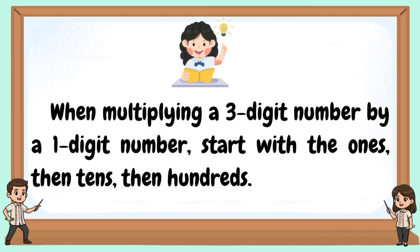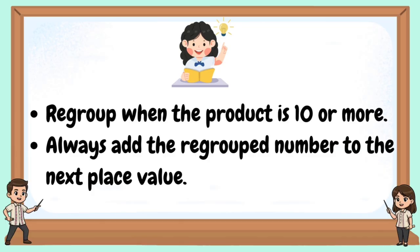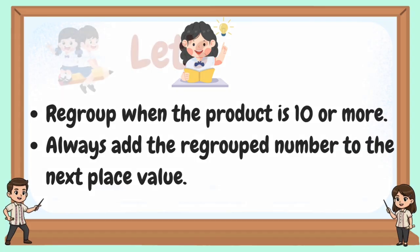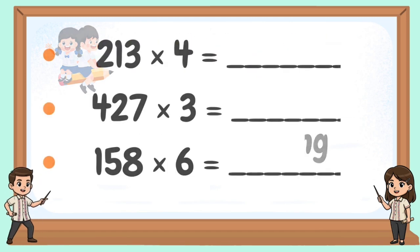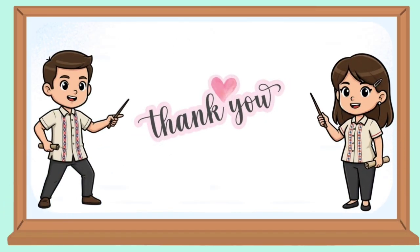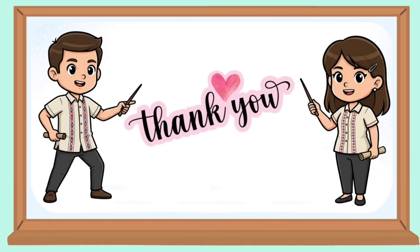When multiplying a 3-digit number by a 1-digit number, start with the ones, then tens, then hundreds. Regroup when the product is 10 or more. Always add the regrouped number to the next place value. Thank you for watching. Till our next mathematics lesson. Goodbye.